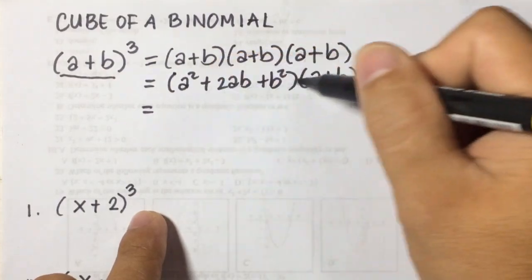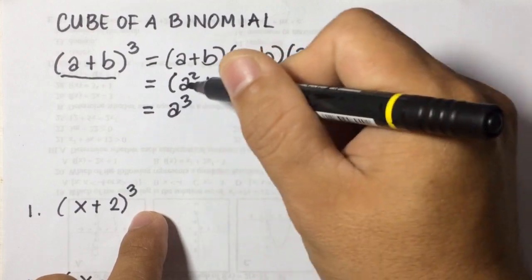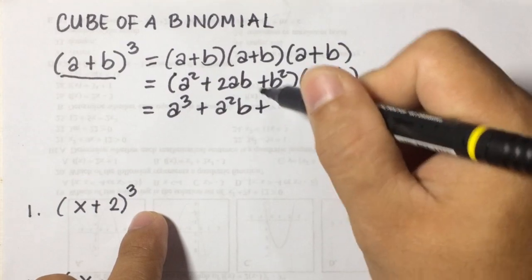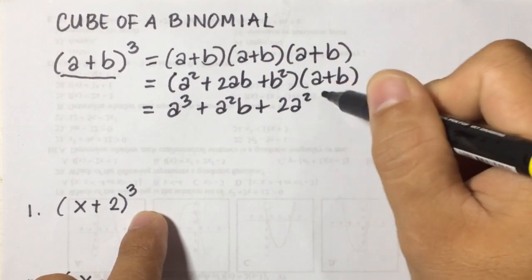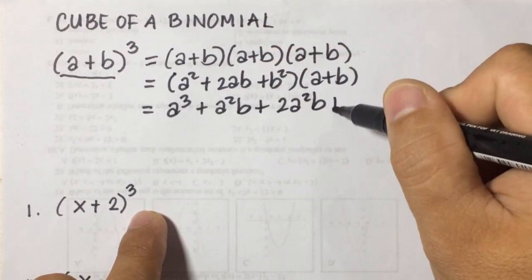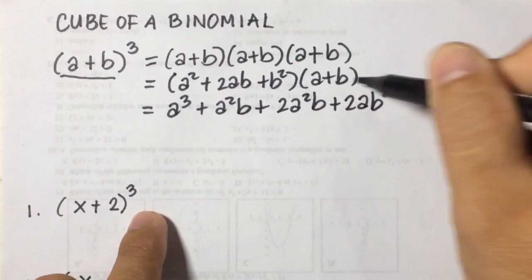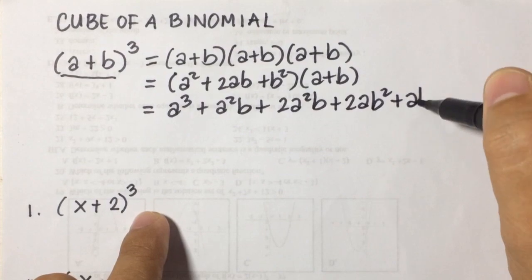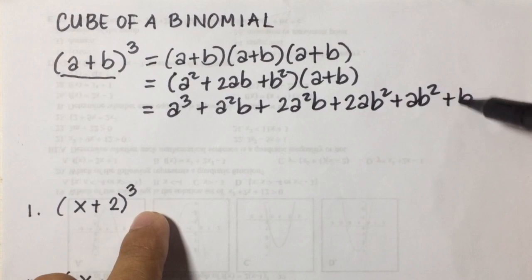Multiplying the result, we get: a squared times a gives a cubed, a squared times b gives a squared b, 2ab times a gives 2a squared b, 2ab times b gives 2ab squared, b squared times a gives ab squared, and b squared times b gives b cubed.